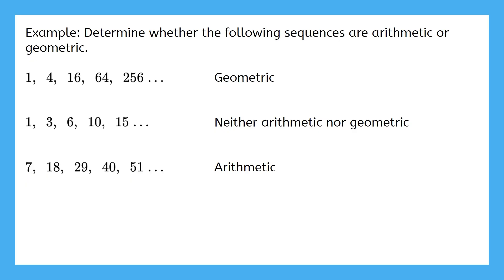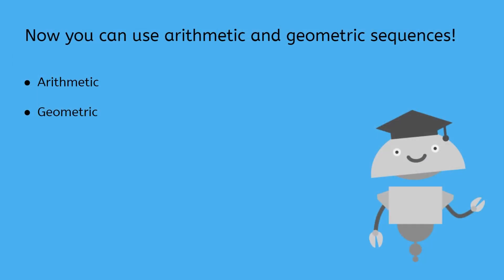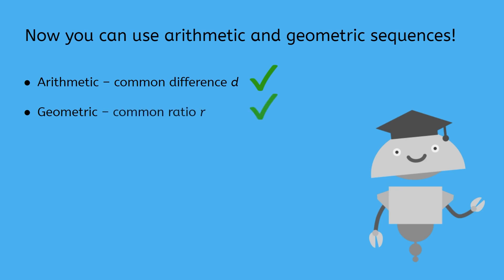Great work! Now you can use arithmetic and geometric sequences. Remember that arithmetic sequences have a common difference d that is added each time. Geometric sequences have a common ratio r that is multiplied each time. In the next lesson, we'll start looking at forms of sequences in more detail. See you then!